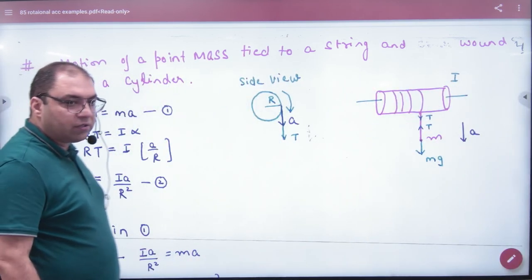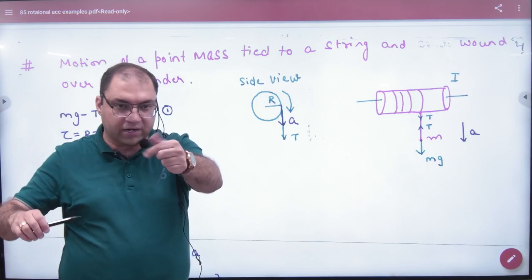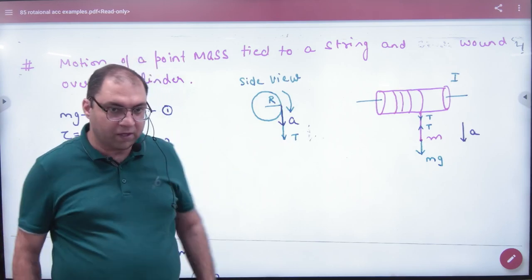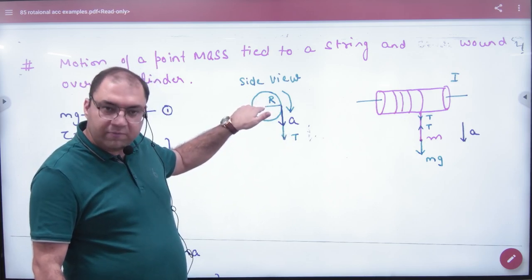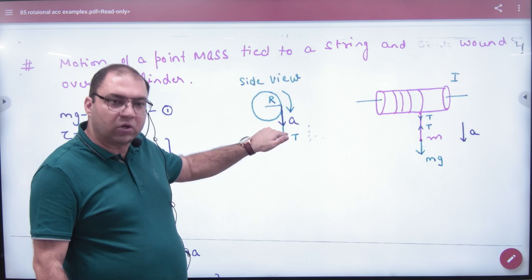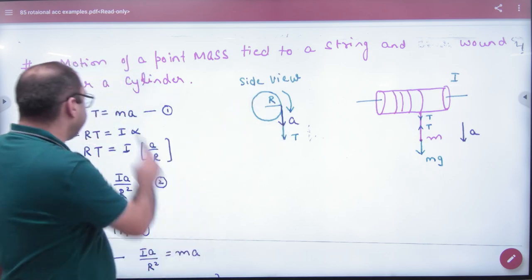The other one, the cylinder is rotating. What will generate torque? Tension T into R. This is the axis of the center. So how much torque? T into R. So this is T into R.